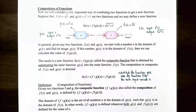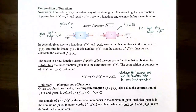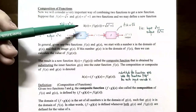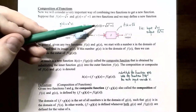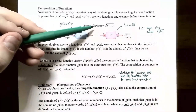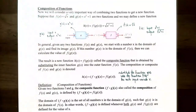Let's talk about composition of functions. We're going to consider a very important way of combining two functions called substitution, which forms a composite function. Suppose we have f(x) = √x and g(x) = x² + 1. We take these two functions and combine them using substitution to form a new function called a composite function. So h(x), this new function, is defined as follows: f is the outside function and g(x) is the inside function, because it looks like you're substituting g(x) into f(x). So it's f of g(x), and it equals √(x² + 1).